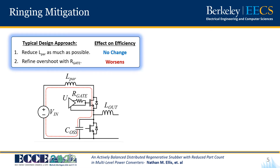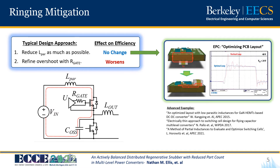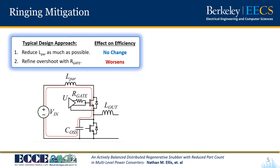To address this, a typical design approach would be to first and foremost minimize the parasitic inductance by designing a very small commutation loop — for example by strategically using inner copper layers as shown here on the right. Having done this, designers will typically then address any remaining overshoot by gently increasing R_gate, which serves to slow down the high-side turn-on, effectively de-Q-ing or dampening the transition. However we really don't want to overdo this since slowing down your turn-on directly degrades efficiency as a result of increased voltage-current overlap loss.